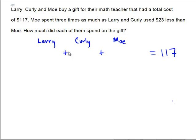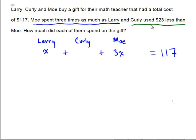As I read through the problem, the one place where Larry shows up is: Moe spent three times as much as Larry. So I'm going to assign Larry a variable. Let's pretend that Larry spent x many dollars. If Moe spent three times as much as Larry, then Moe must have spent 3x. Then, Curly spent $23 less than Moe, and Moe is 3x.